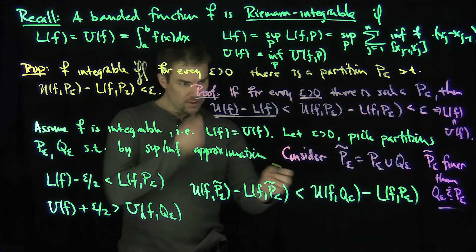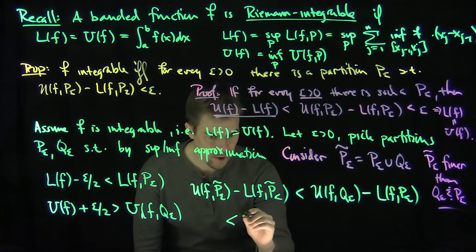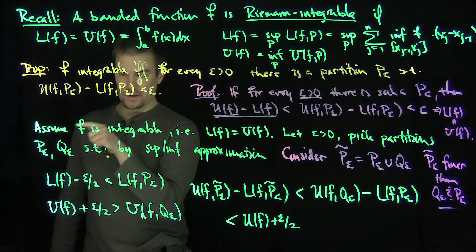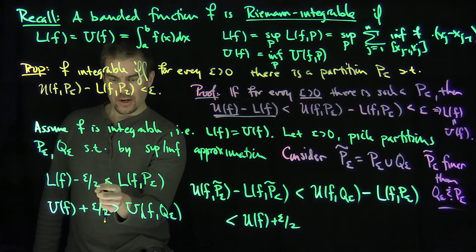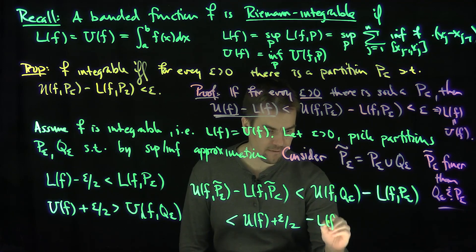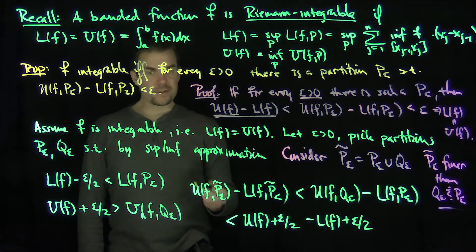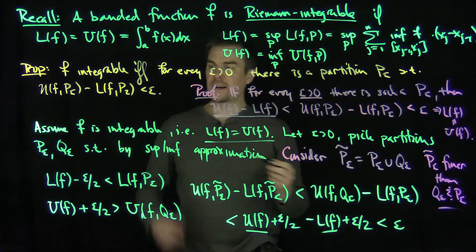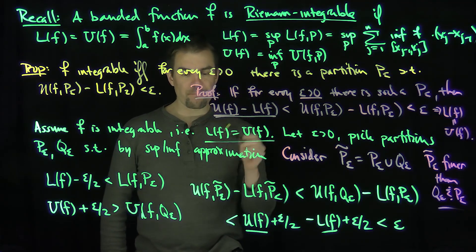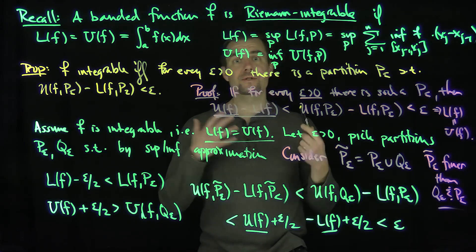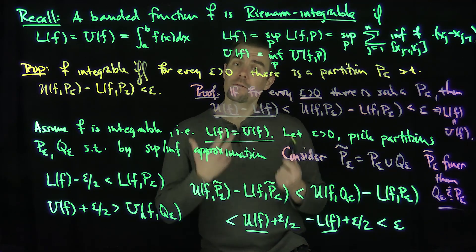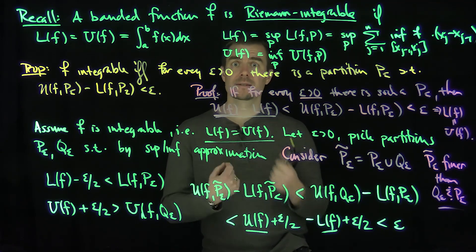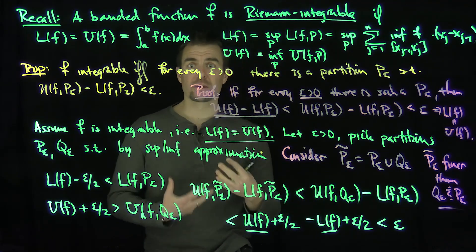Now I can replace U(f, Q_epsilon) with Uf plus epsilon over 2, and replace negative L(f, P_epsilon) with negative Lf plus epsilon over 2 to make the whole thing larger still. By assumption, Lf equals Uf, so those terms cancel and we get that this is less than epsilon. So I've constructed a partition P̃_epsilon for any epsilon greater than zero such that U(f, P̃_epsilon) minus L(f, P̃_epsilon) is less than epsilon. This proves the equivalence: F is Riemann integrable if and only if for every epsilon greater than zero there exists a partition P_epsilon such that U(f, P_epsilon) minus L(f, P_epsilon) is less than epsilon. This criterion will be used to prove that certain classes of functions are Riemann integrable in future videos.